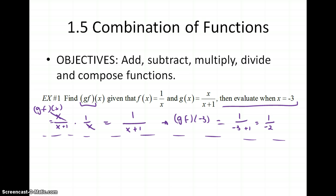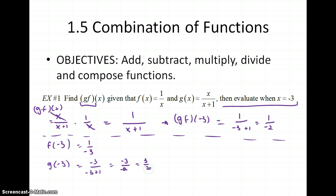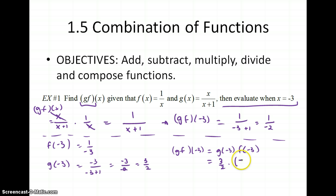There is an alternate method. We can find f of negative 3 by plugging in negative 3, which gives 1 over negative 3. And we can find g of negative 3 by plugging negative 3 in two places: negative 3 over negative 3 plus 1, which is negative 3 over negative 2, or 3 halves. Then g times f of negative 3 is g of negative 3 times f of negative 3, which is 3 halves times negative 1 third. The 3's cancel, leaving negative 1 half. So two ways: either multiply then plug in, or plug in then multiply — it's about the same amount of work either way.